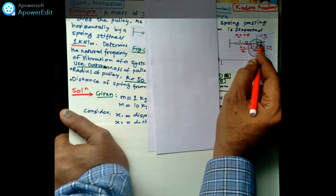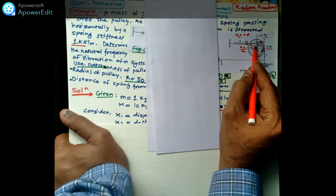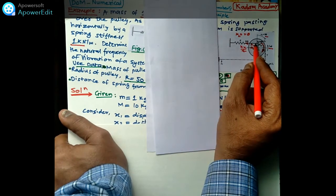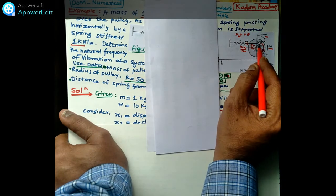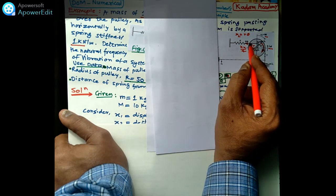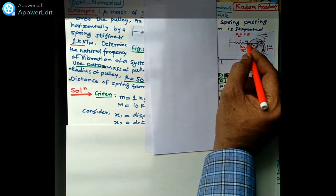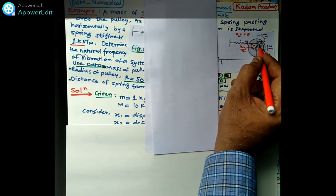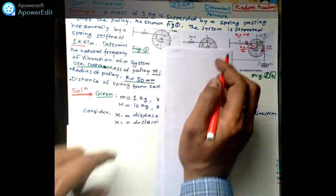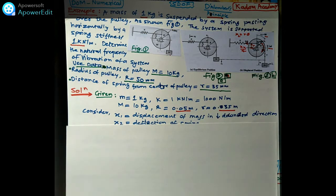Since the spring is connected at distance r and the pulley rotates by angle theta, we can write: kx = k·r·theta. That is the force exerted by the spring on the pulley. By using this diagram and applying D'Alembert's principle, we can solve the equation of motion.